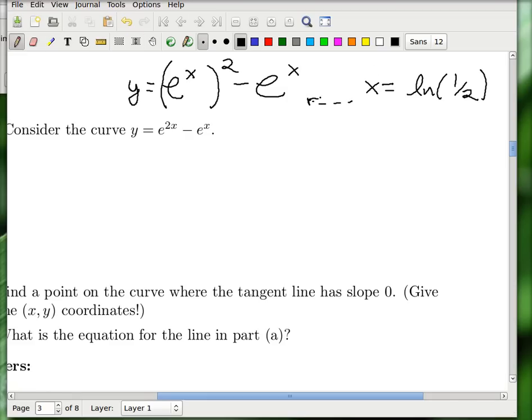So when I plug this value for x in, you get e to the natural log of 1 half, it's just 1 half. This gives me 1 half squared, minus 1 half, and this is minus 1 half, because this is a quarter, take away a half. Well I was a little hasty. So this is a quarter, and if you take away a half, you get a minus 1 half. Wait, that's a minus 1 fourth.